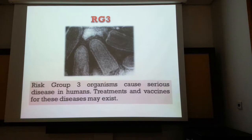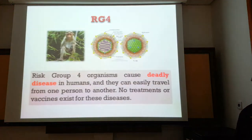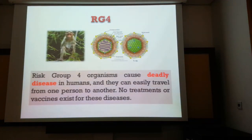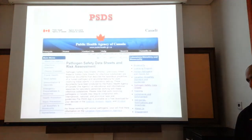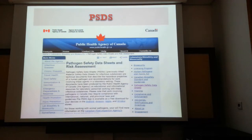Risk Group 3 organisms can cause serious diseases in humans, with potential mortality as well as morbidity; however, treatment exists and vaccines have been developed. Risk Group 4 agents — such as the simian herpes virus — cause deadly disease and there is no treatment or vaccine available. A widely used reference is the pathogen safety data sheet, developed by the Public Health Agency of Canada, which gives an overview of the risk group and therapeutic procedures for a clinician in the case of infection.